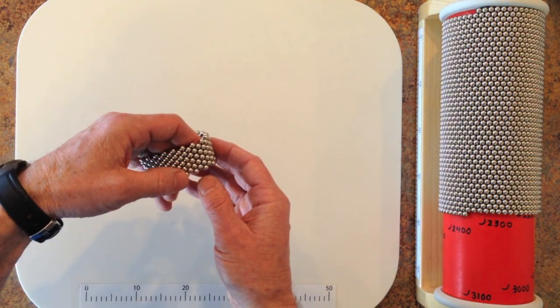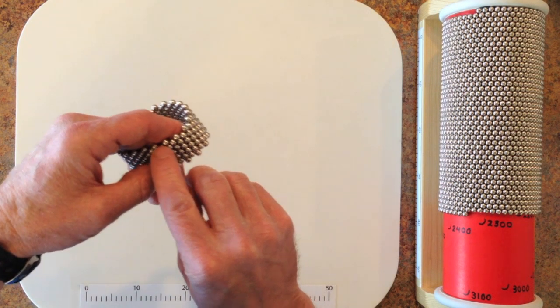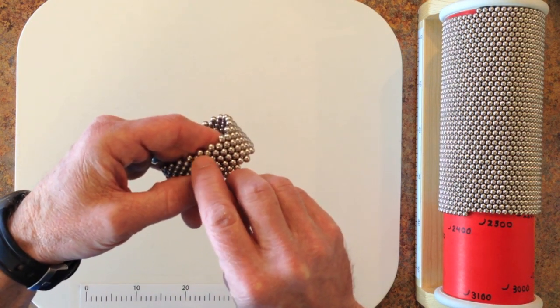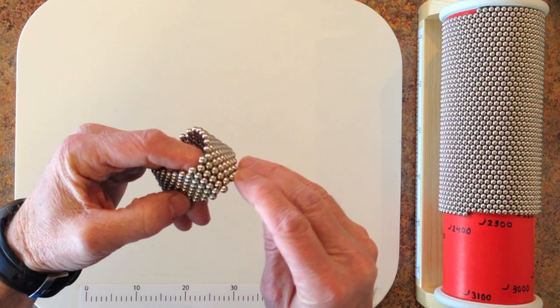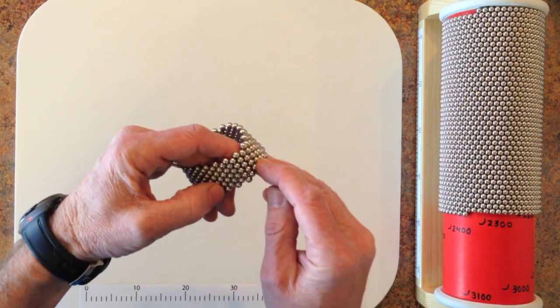The magnetic fields follow the chains as they spiral around the tube. So the magnetic field lines run spirally around the tube like that.